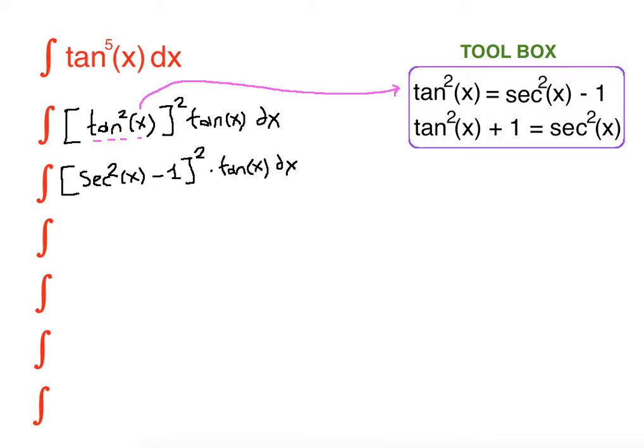Now we are going to do normal u substitution. Here our u is secant x. So what is du then? The derivative of secant x is secant x times tangent x dx. And if you solve for dx here you get du over secant x tangent x.